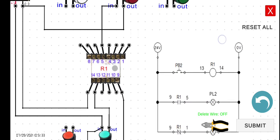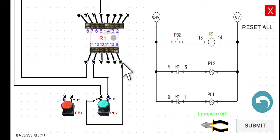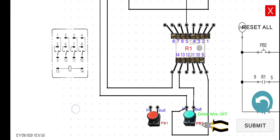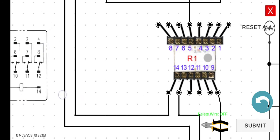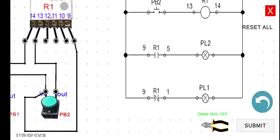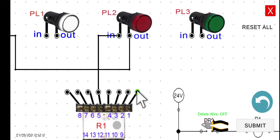Next is terminal 9. We already connected this to the input of PB2, so we don't need to connect it to itself. Note in the equivalent diagram that the 9–5 pair is the normally open contact, and the other side is the normally closed contact. So we only need to connect terminal 1 to the input of PL1.